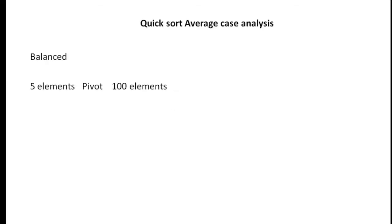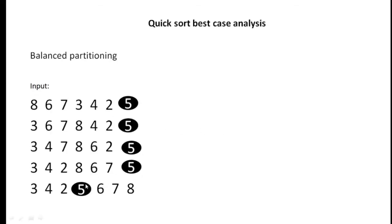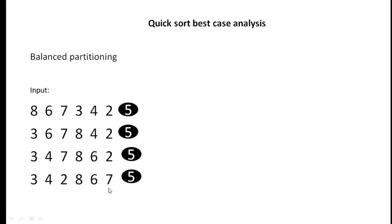In this video I'm going to talk about the average case time complexity of quicksort. I have already talked about the best case and the worst case time complexity of quicksort. Average case time complexity is very much close to balanced partitioning. Balanced partitioning means that when the pivot element partitions the array into halves with equal number of elements, and both parts have the same number of elements, that is known as balanced partitioning.